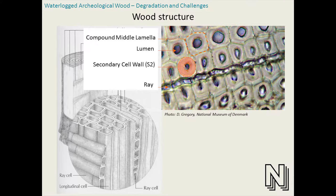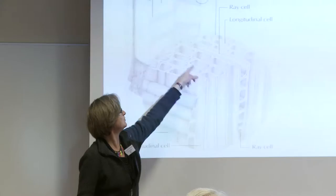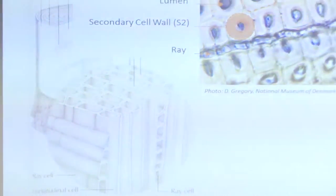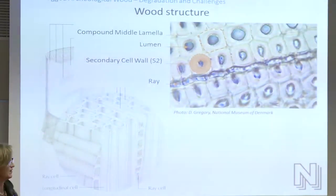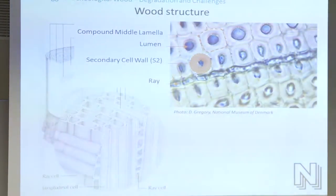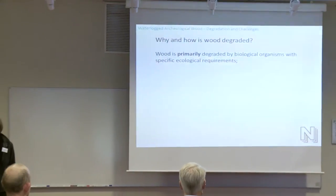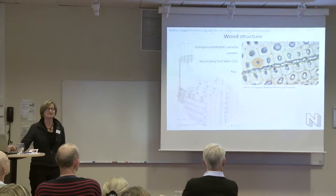The wood structure, as we know it: we have the trunk, the rays, the longitudinal cells — very important — and the ray cells going in the other direction. If you look in the microscope at the wood cell, we have a cell lumen in the middle, a secondary cell wall mainly consisting of cellulose and hemicellulose, and the compound middle lamella mainly consisting of lignin.